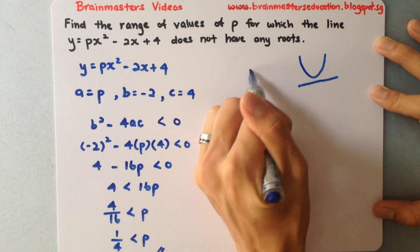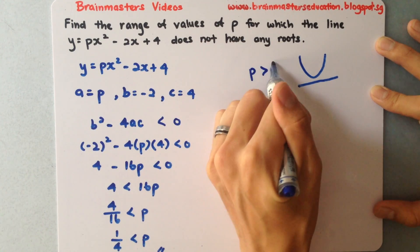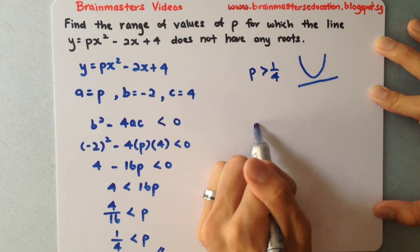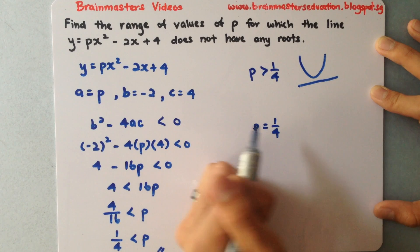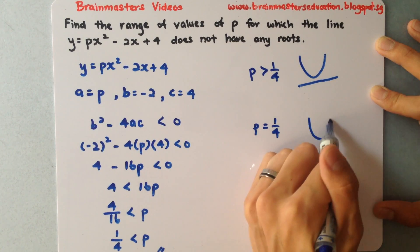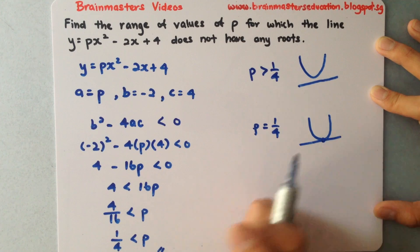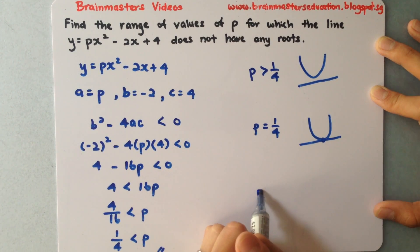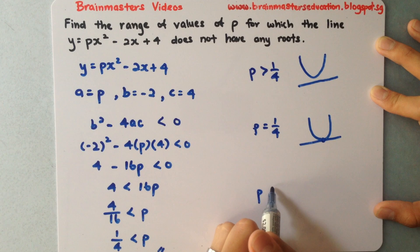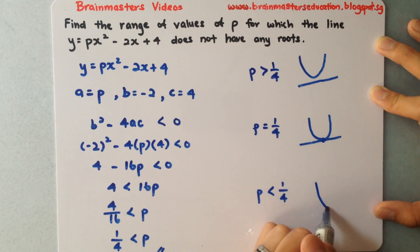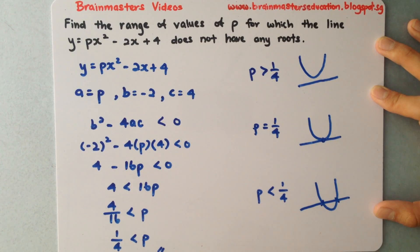When p is greater than 1/4, the line has no intersection. If I put p equal to 1/4, the line will actually touch at exactly one point. And if p is smaller than 1/4, the line will be cutting the curve at two points.